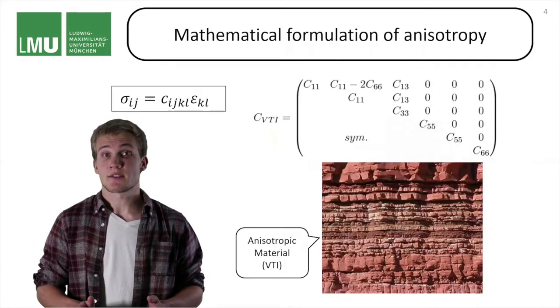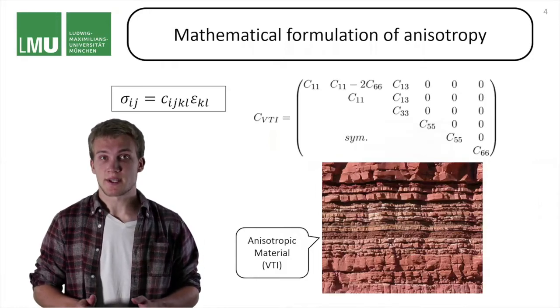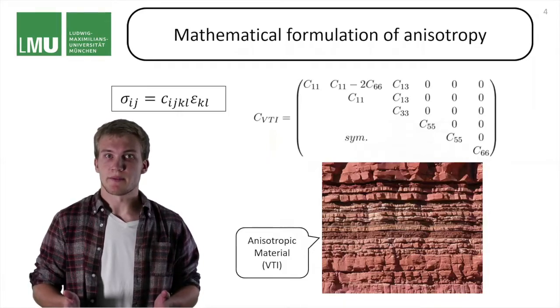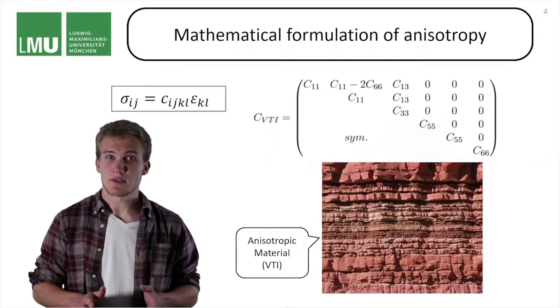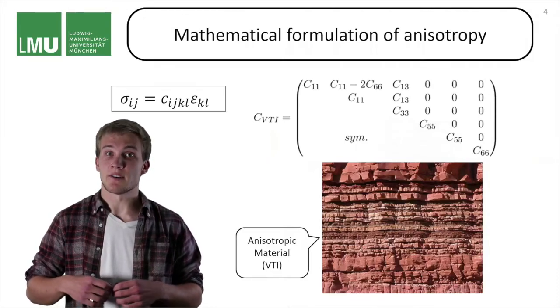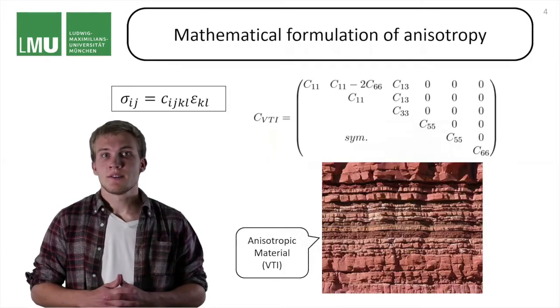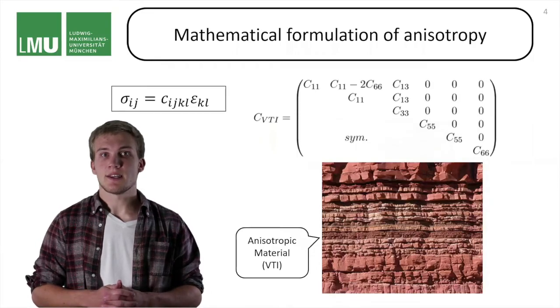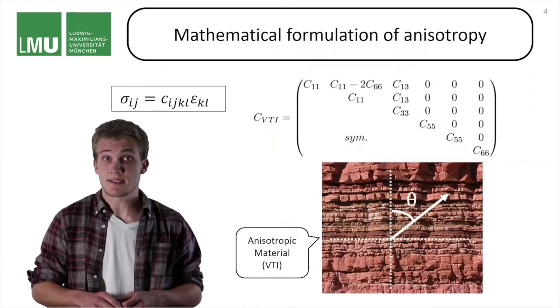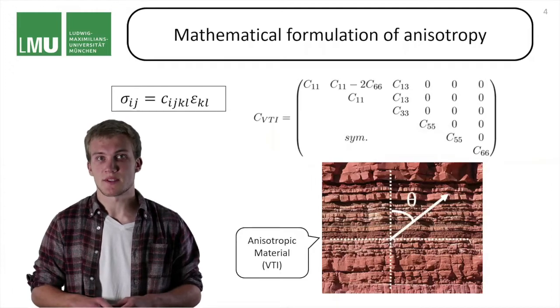If you have ever worked with anisotropy, you have probably done that with vertically transverse isotropic systems, short VTI. Those systems are so popular because they are still relatively simple with just five independent parameters, and at the same time they describe a rock that is horizontally layered. Also in this medium, the wave parameters only depend on a single angle, which is the incident angle, and not on two angles as it is the case for more complex symmetry systems.